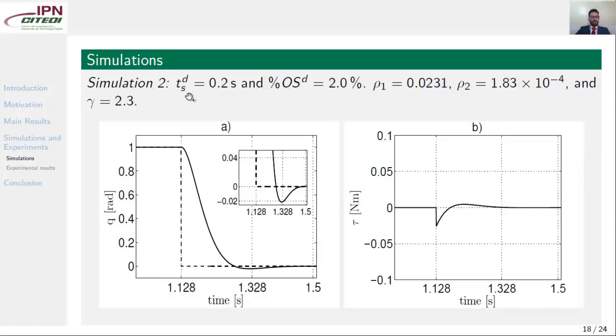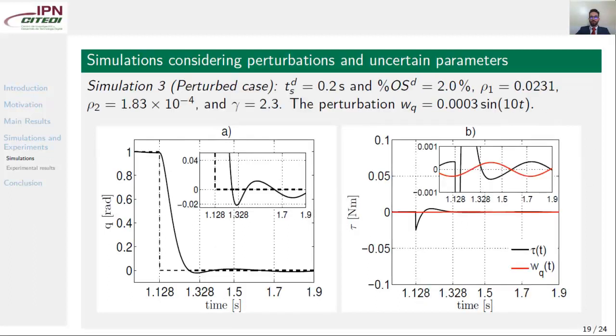In simulation 2, we change a little bit the desired specification of the step time response. We want 0.2 seconds of settling time and an overshoot of 2 percent. Applying the methodology, we get rho1, rho2, and gamma. Figure A shows the step time response. Here we have 0.2 seconds of settling time and a 2 percent overshoot. One more time, we achieved the desired specification of the step time response and this is the control input required.